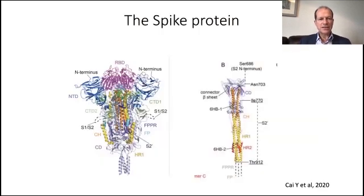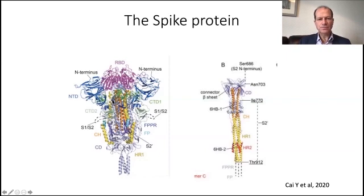This is a structure of the spike protein. It has two forms: a globular form at rest, and then when activated, a rod-like form. You can see what a beautiful structure it is.